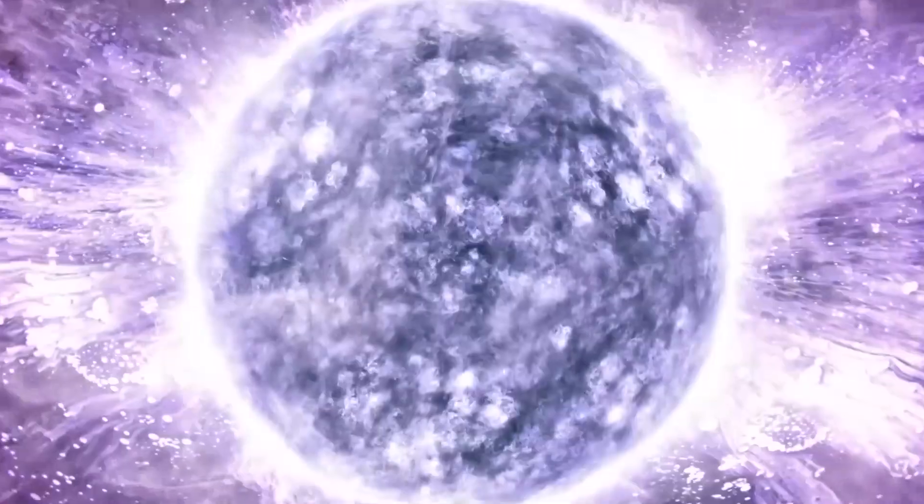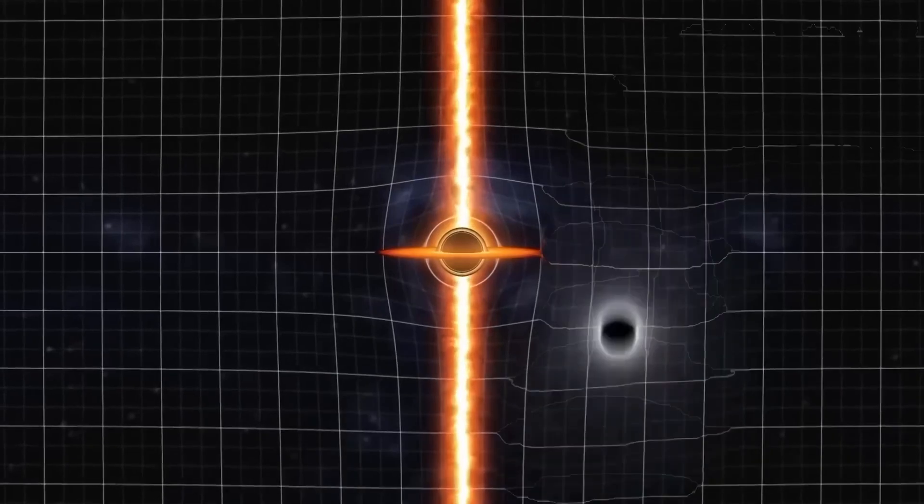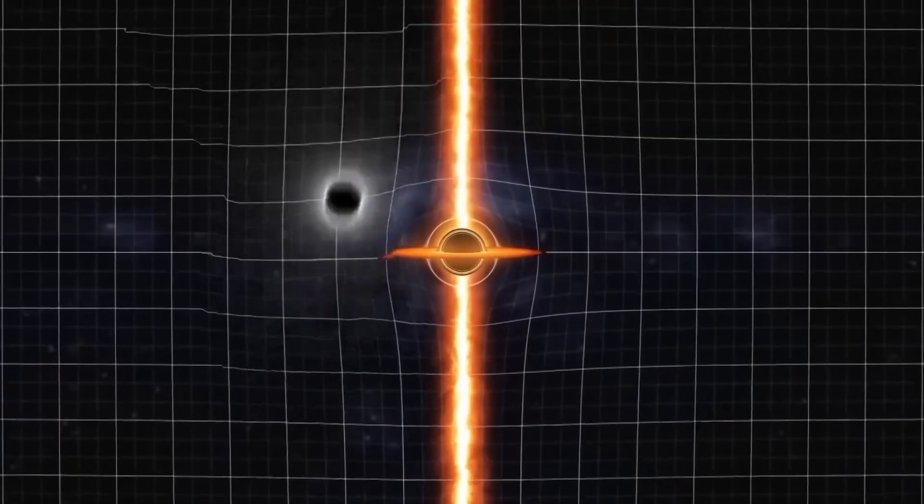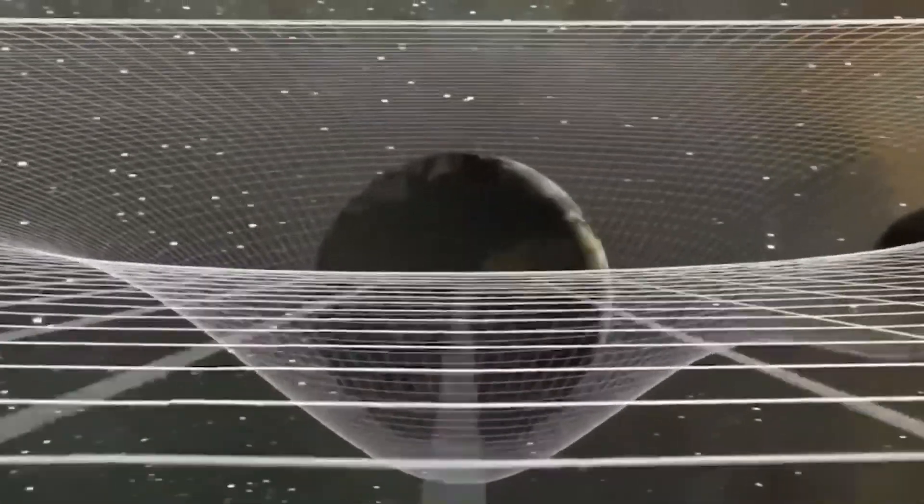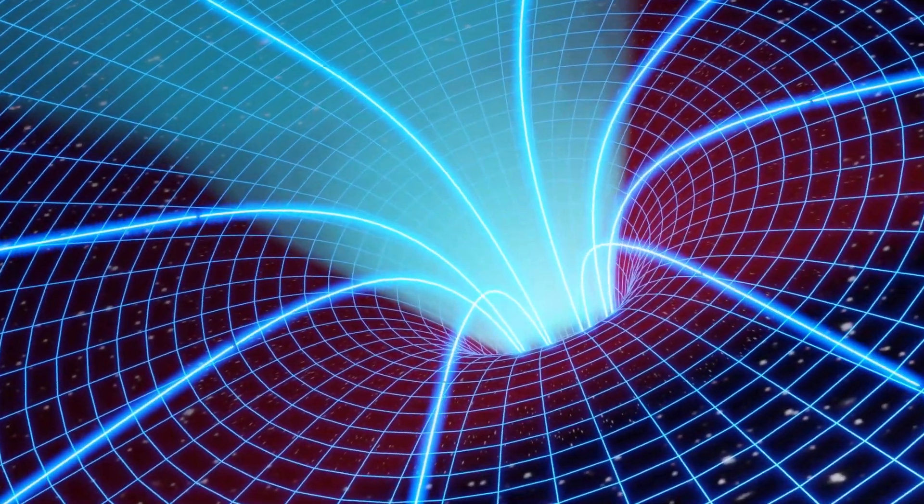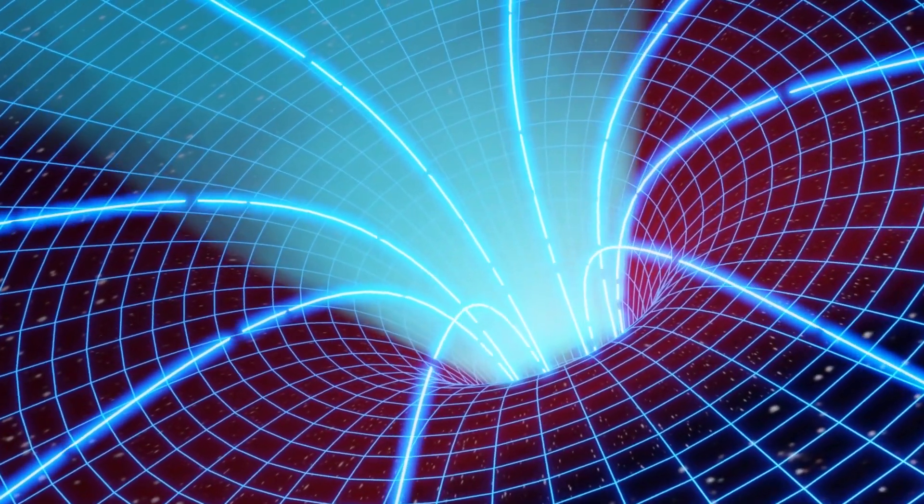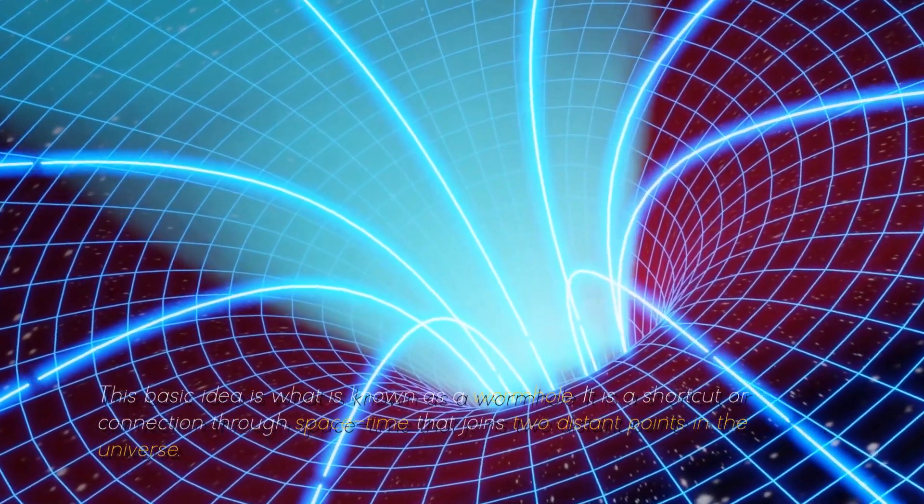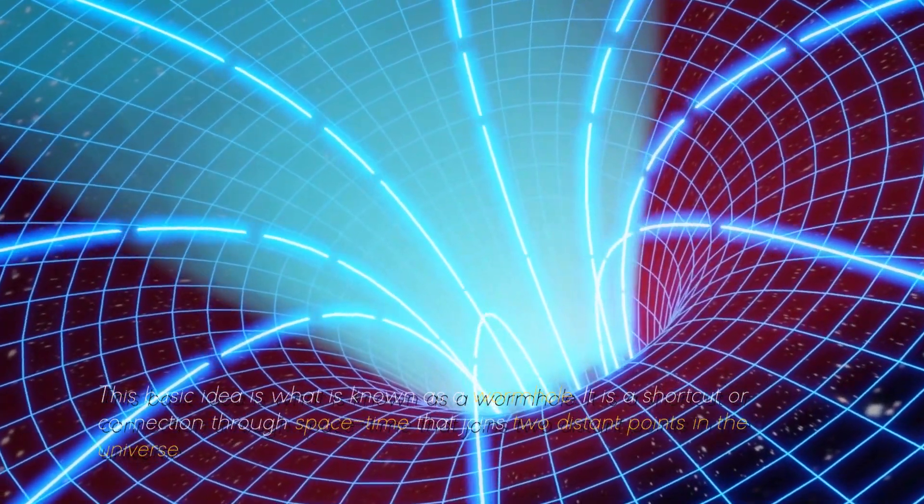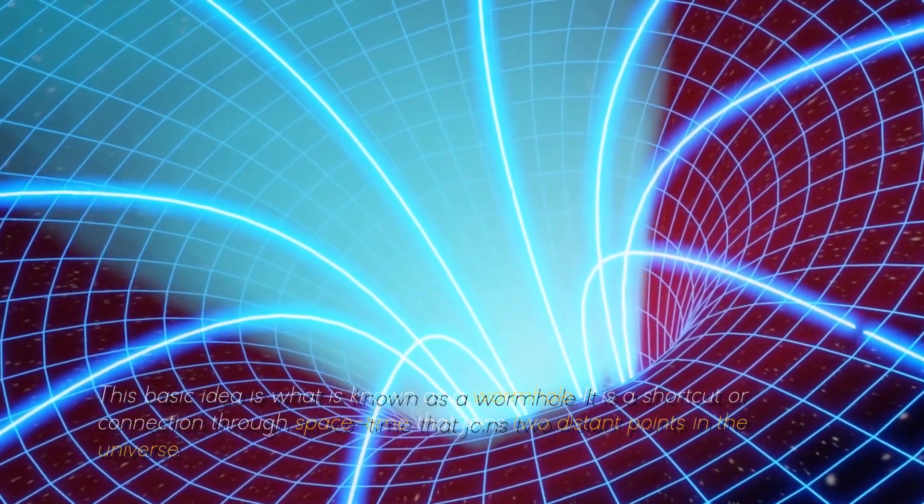To visualize this, we can imagine a sheet of paper representing space-time. If we place two points onto the paper and draw a line between them, we are representing how objects move through space-time. Now, let's consider folding the paper in half and creating a shortcut between those two points. This basic idea is what is known as a wormhole. It is a shortcut or connection through space-time that joins two distant points in the universe.